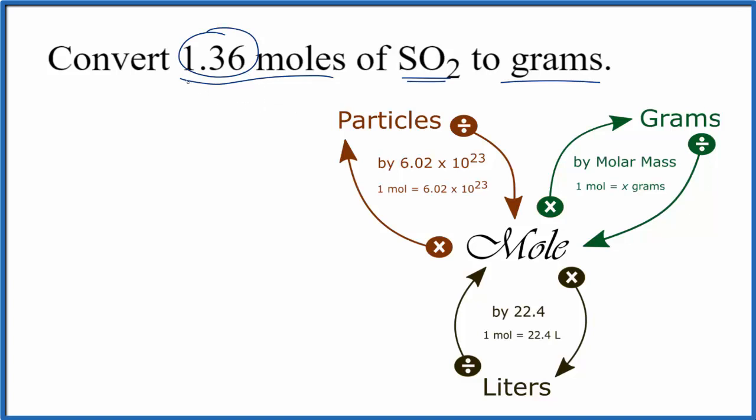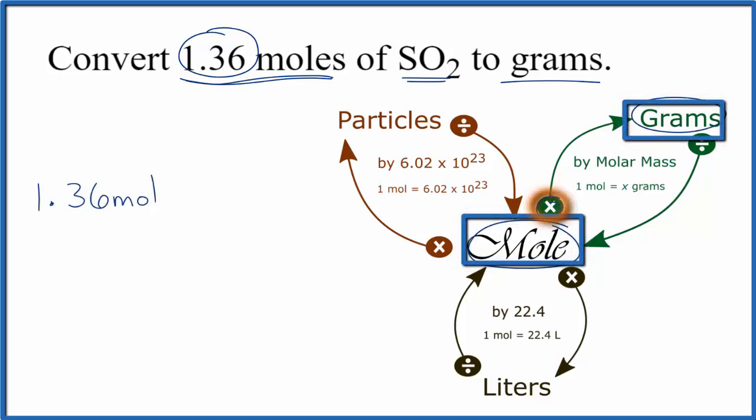So we have 1.36 moles of SO2, and when we have moles and we want to go to grams, we're going to multiply by the molar mass. And we can find the molar mass for SO2 by going to the periodic table and adding up the masses of all of the atoms here.